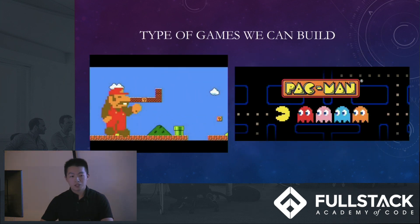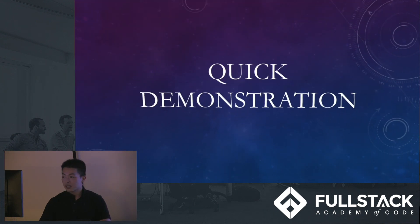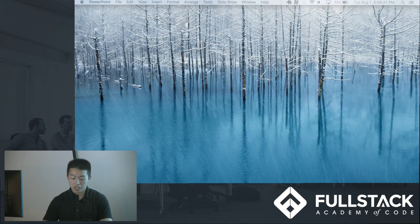As I mentioned earlier, Phaser is a two-dimensional game engine, so we can't do 3D. We can make games like Super Mario, Pac-Man, and any of the classic arcade games you can think of, like Tetris. Right now I'm going to do a quick demo of a couple of games that I made with the help of a Udemy tutorial.